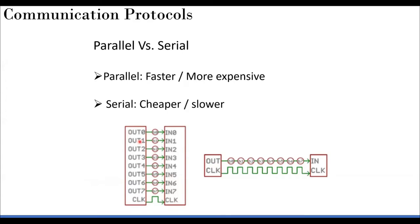The order of transmission can be most significant bit first or least significant bit first, which is mostly configurable. You transfer the first bit, second bit, third bit, and so on, each with the help of a clock. Some protocols don't need a clock, but assuming one exists, you need eight clock cycles to transmit the data compared to one clock cycle in parallel. However, serial needs only two wires versus nine wires (including clock) for parallel.